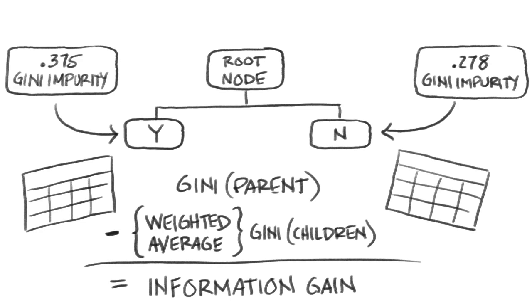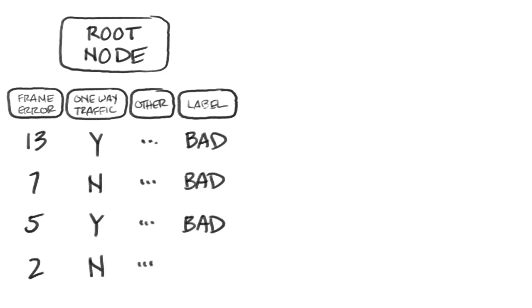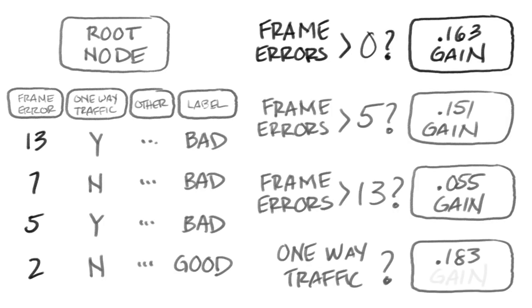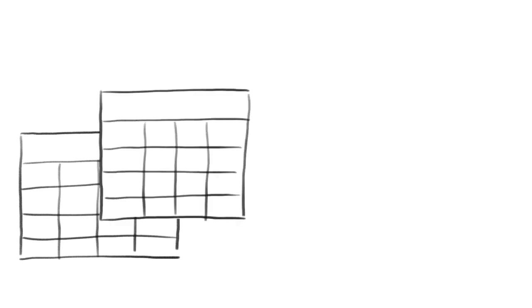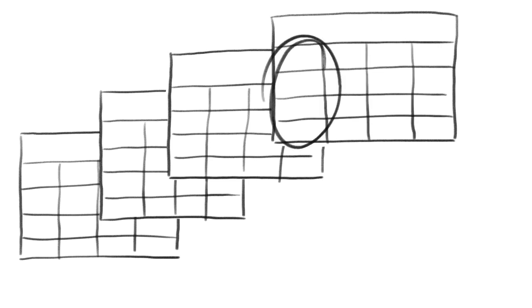Now we are ready to build the tree. We start at the root node of the tree which is given the entire data set. Then we need the best question to ask at this node. We find this by iterating over each of these values. We split the data and calculate the information gain for each one. As we go, we keep track of the question that produces the most gain. Found it.